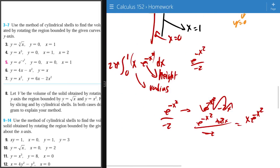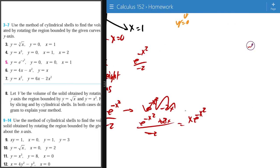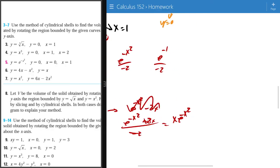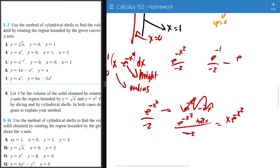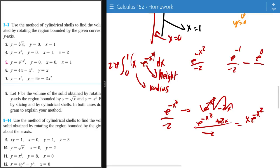And then what we do next is we just plug in these, the 1 and the 0 ending points. So e to the power of negative 1 over negative 2, then minus e to the power of 0 over negative 2.